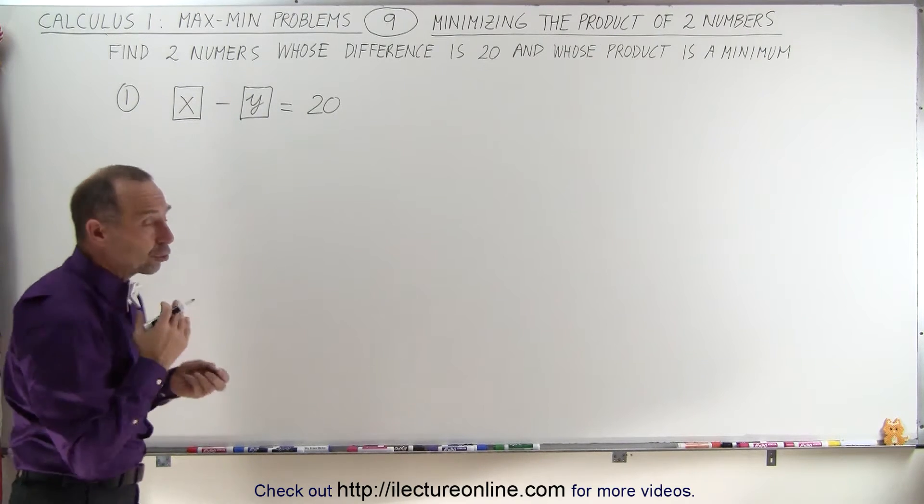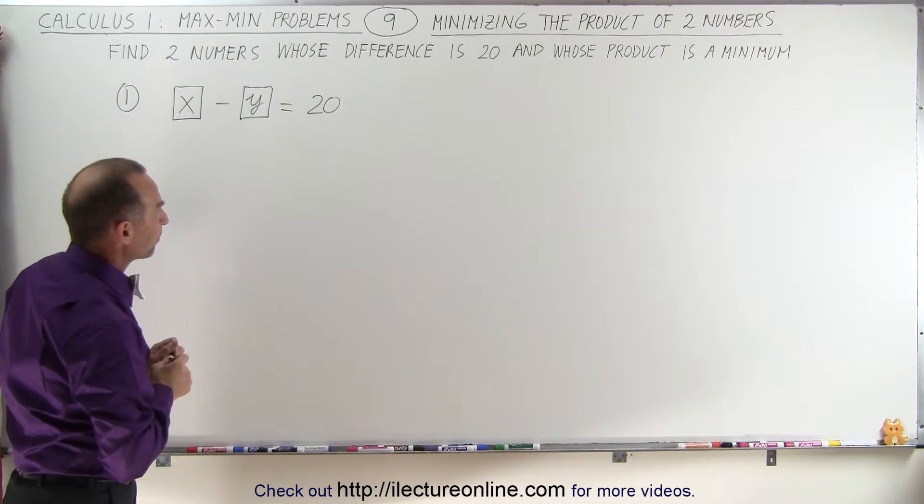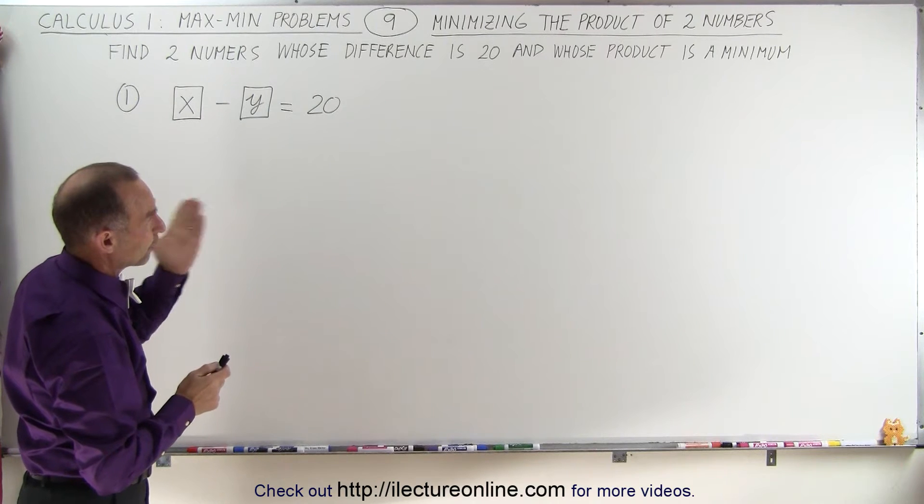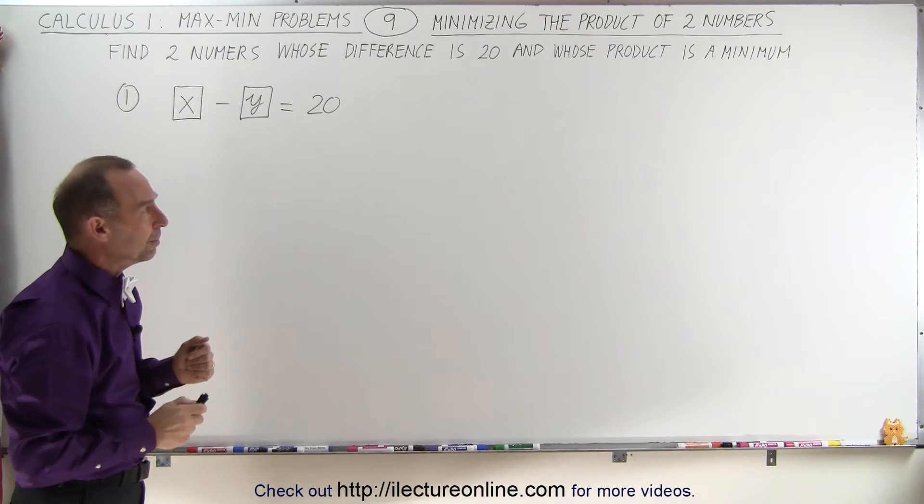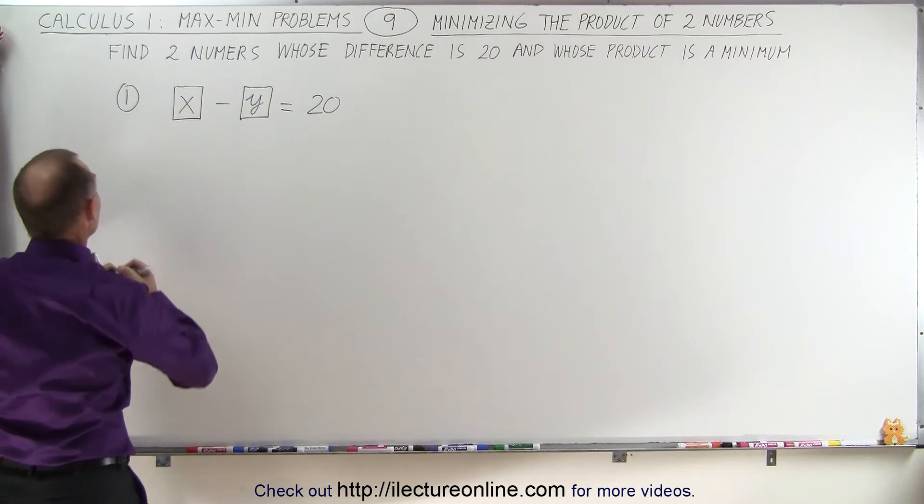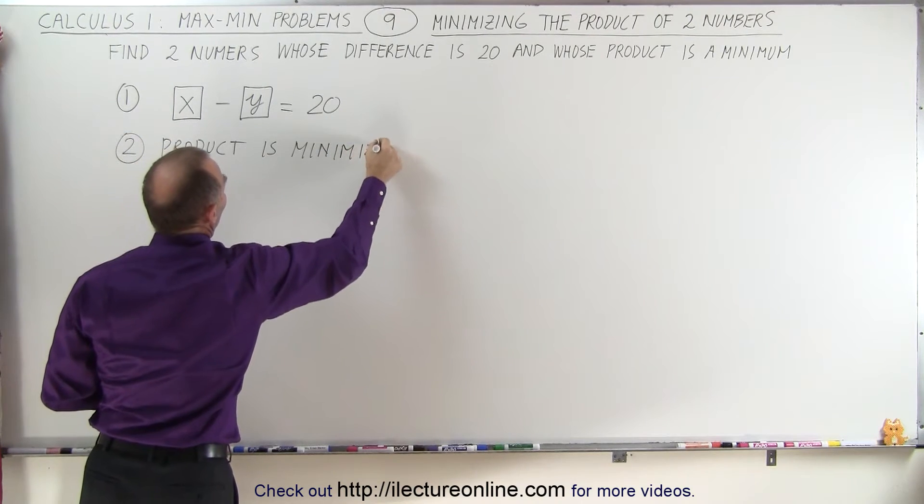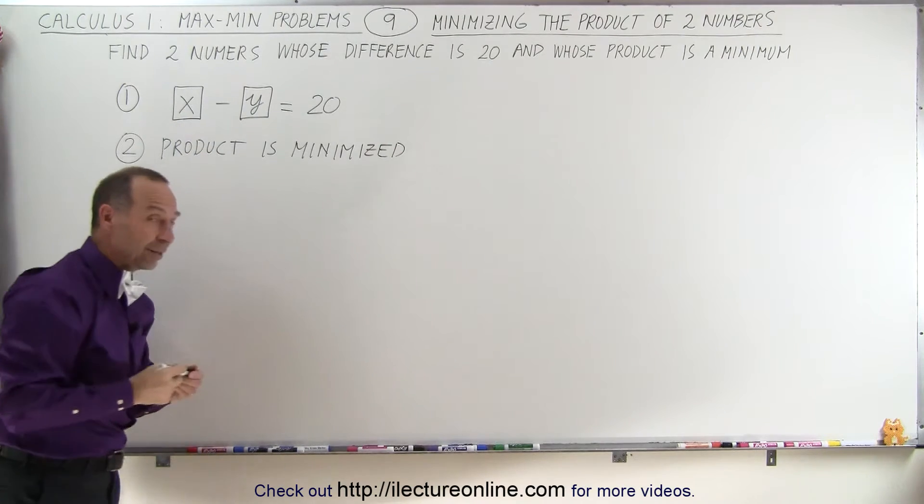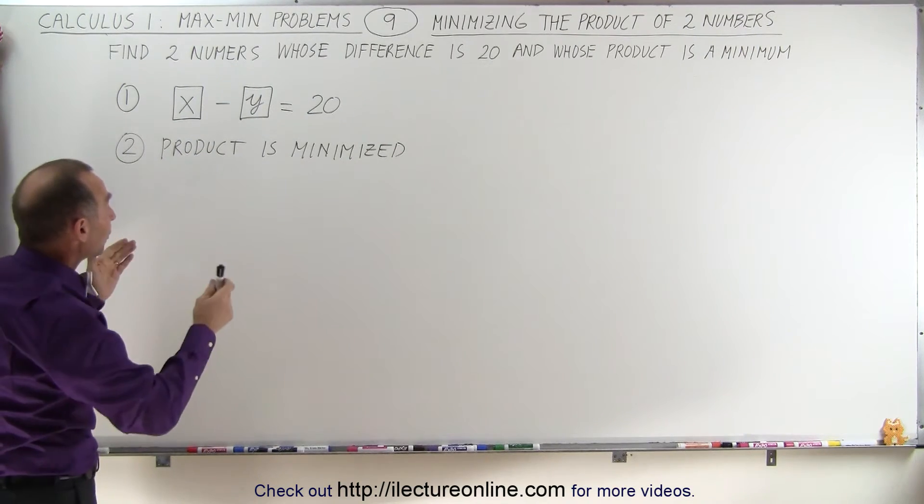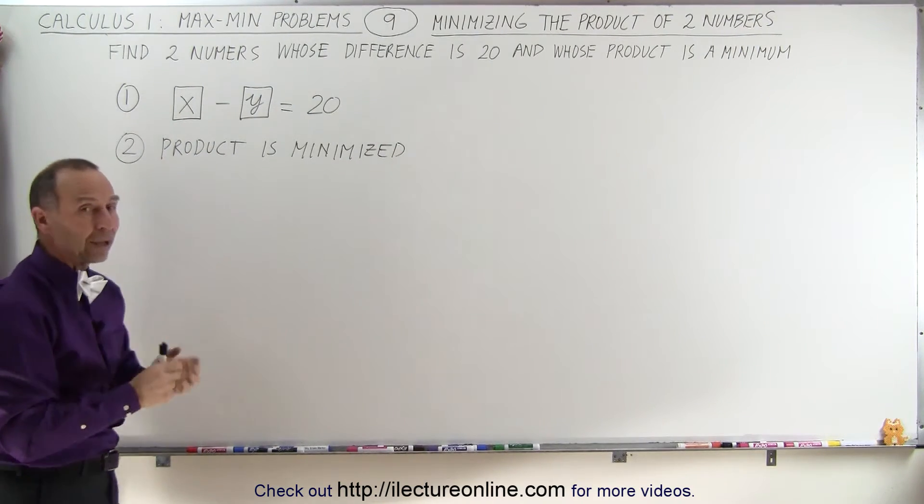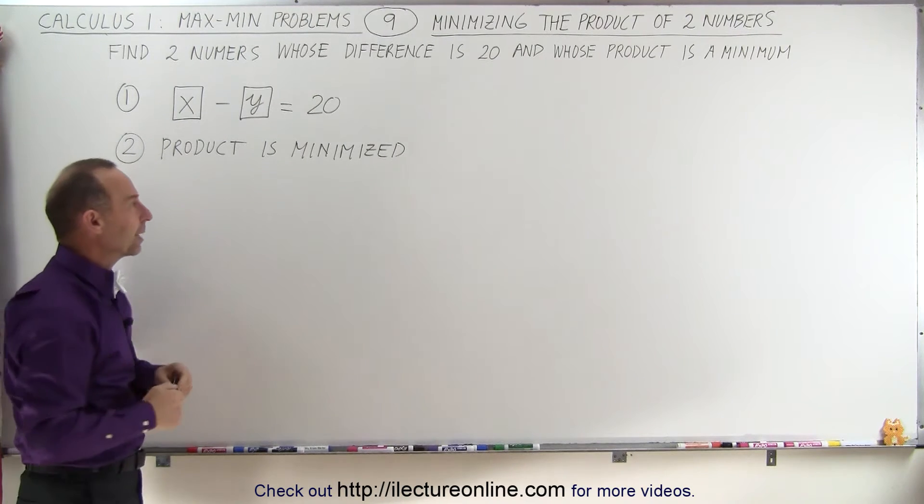Secondly, we need to determine what's being maximized or minimized. Now the problem tells us that we're trying to find the product to be a minimum, so the product is being minimized. Now here it seems obvious, and you don't think we should have to write that down, but in some cases it really helps to just write out what's being maximized or what's being minimized.